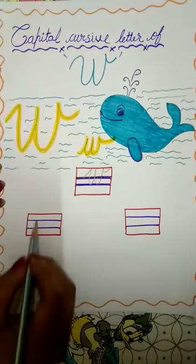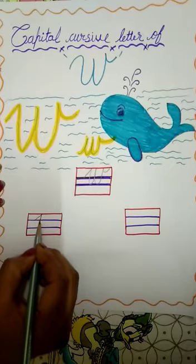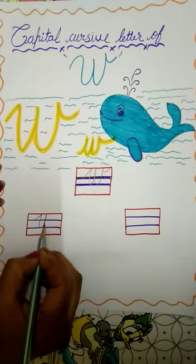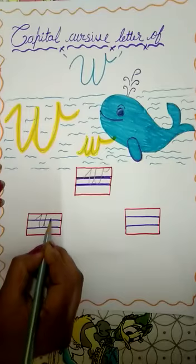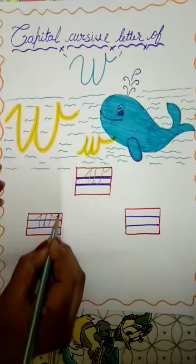See kids. One more time. I will show you how to write slanting line. Go down to the second blue line. Up. Again, go down. Up.